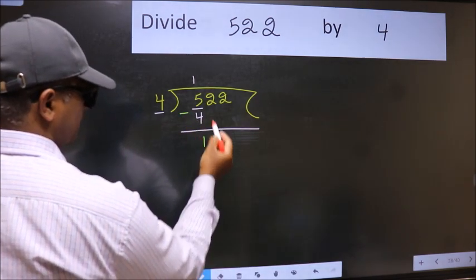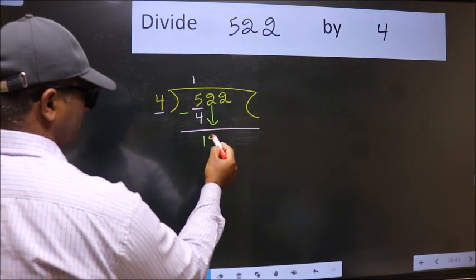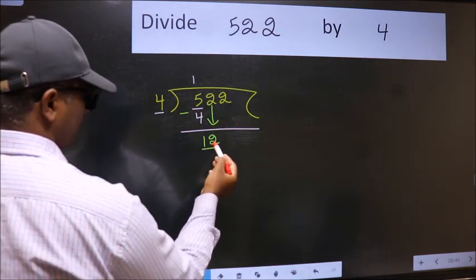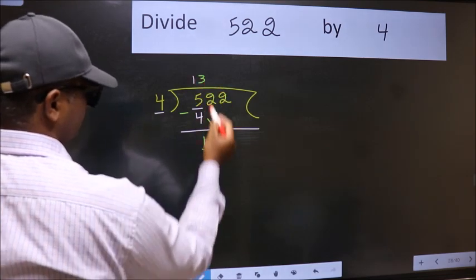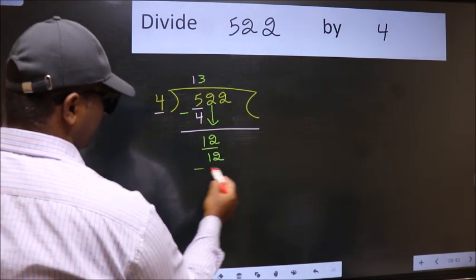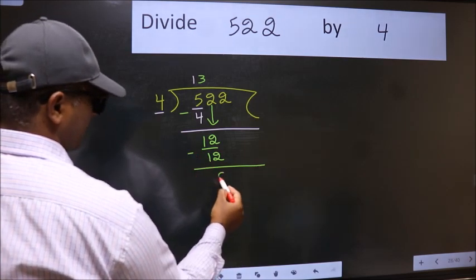After this, bring down the beside number. So 2 down. So 12. When do we get 12 in the 4 table? 4 times 3 is 12. Now we subtract.